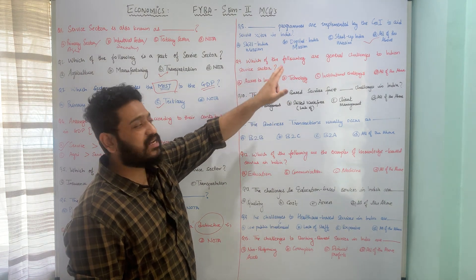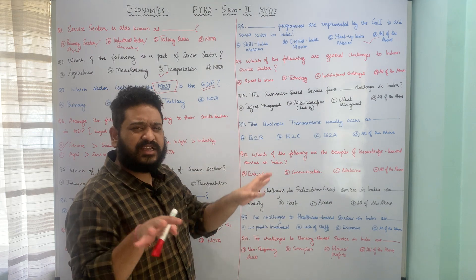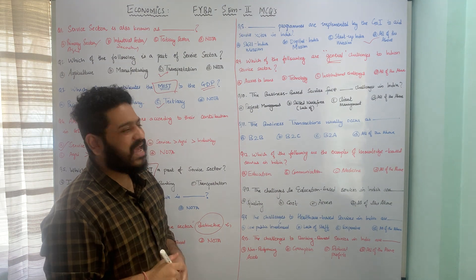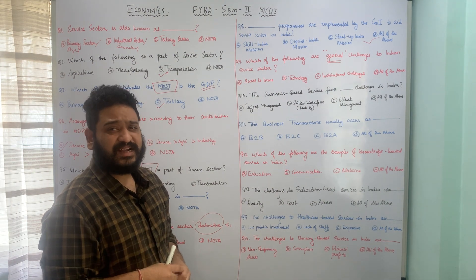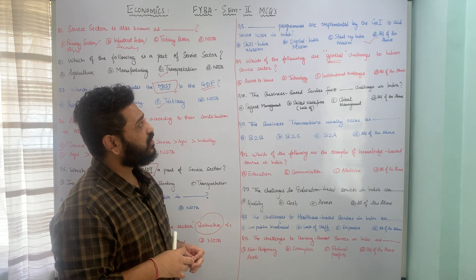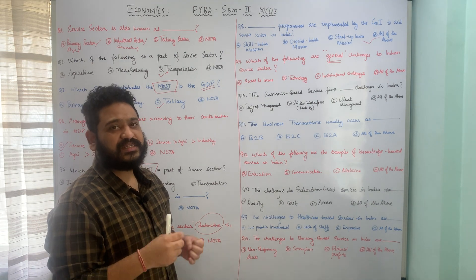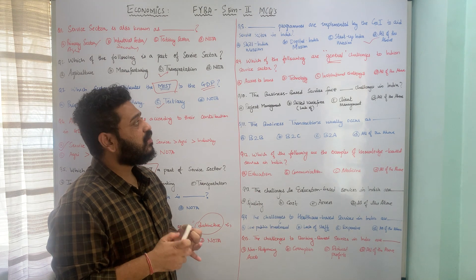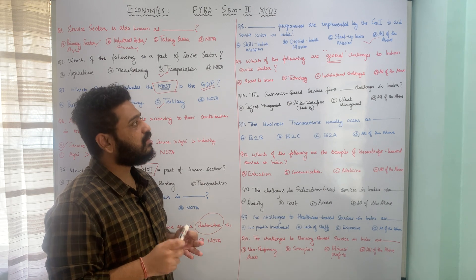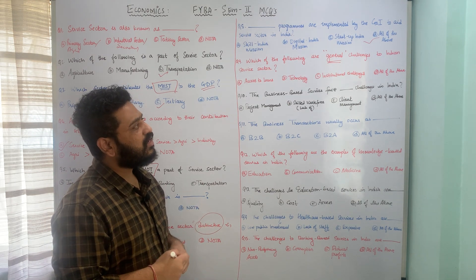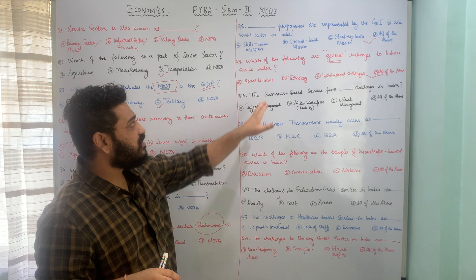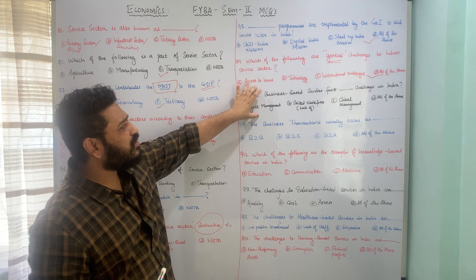Which of the following are general challenges to the Indian service sector? Option A is access to loan, option B is technology, option C is institutional challenges, and option D is all of the above. The general challenges include poor access to loans, an underdeveloped technological base, and institutional challenges. Therefore, option D, all of the above, is the correct answer.